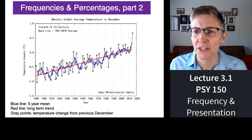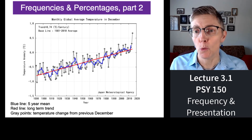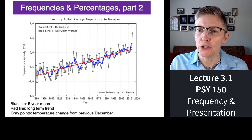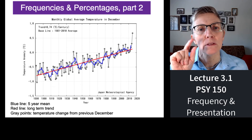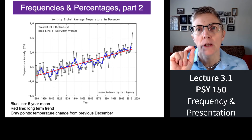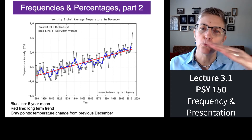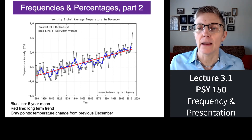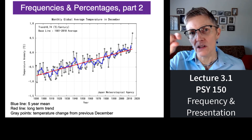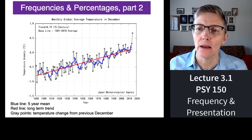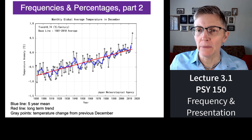Here's another frequency distribution related to global warming. The individual points are temperature changes by year. What I want you to see is that red diagonal line — while there is temperature variation, there's an overall uptick in temperature. This is evidence of global warming displayed in a frequency distribution.